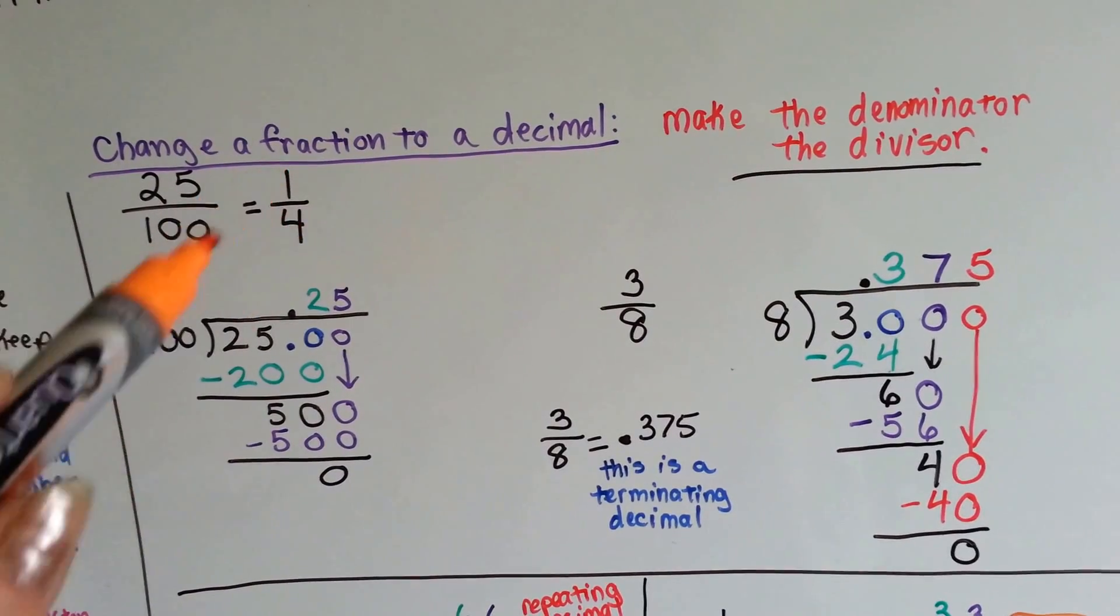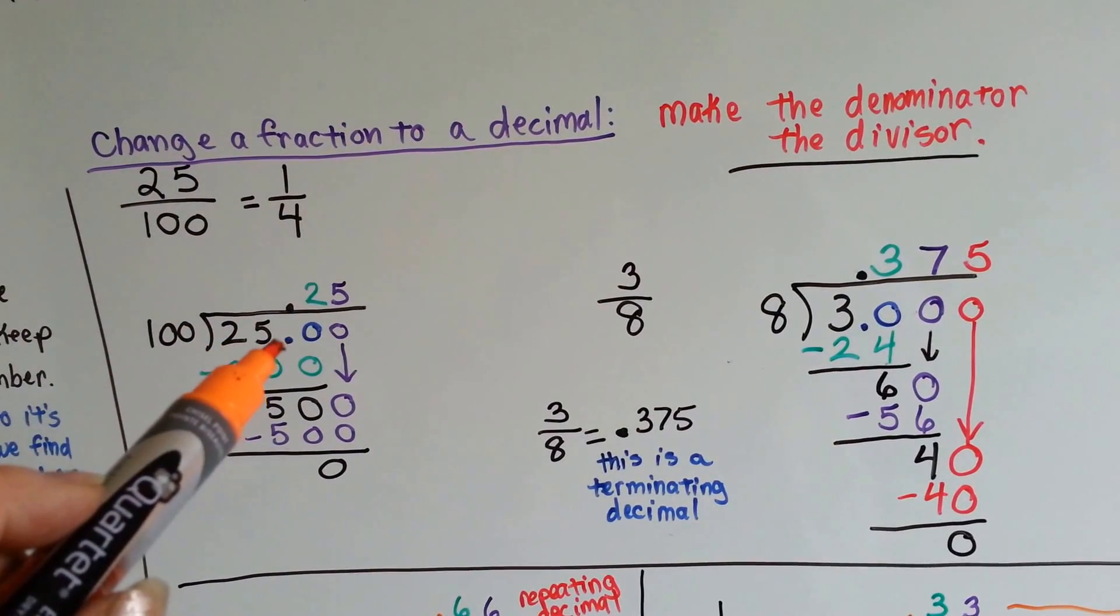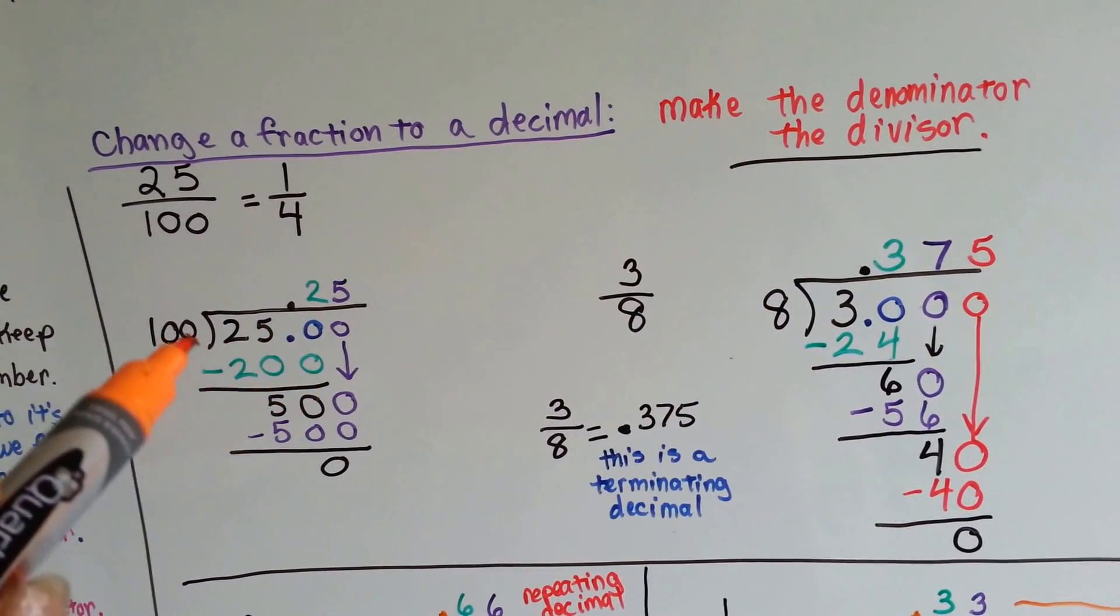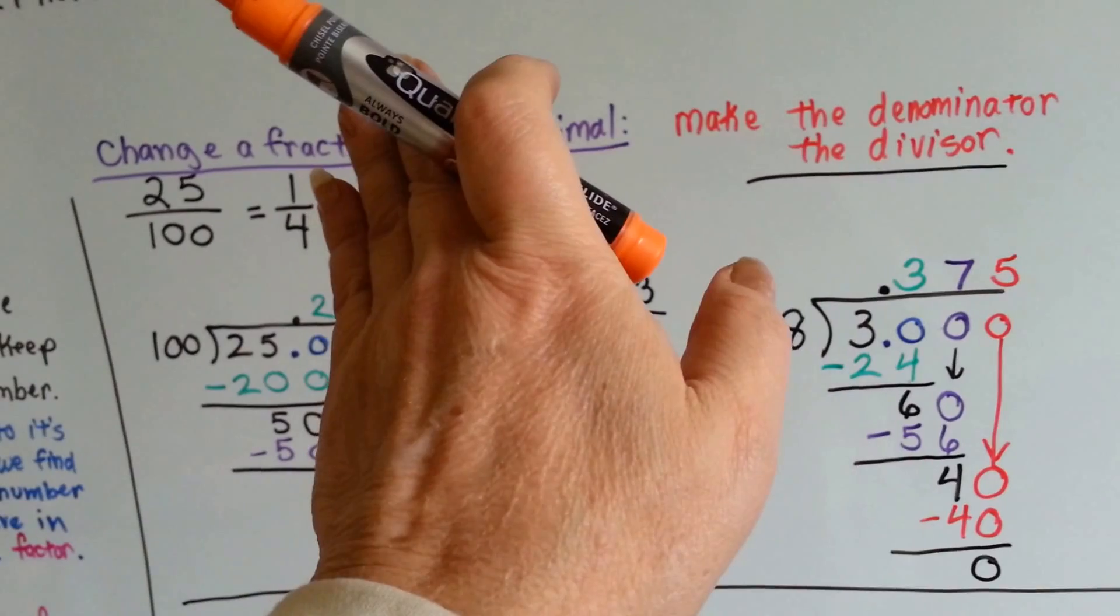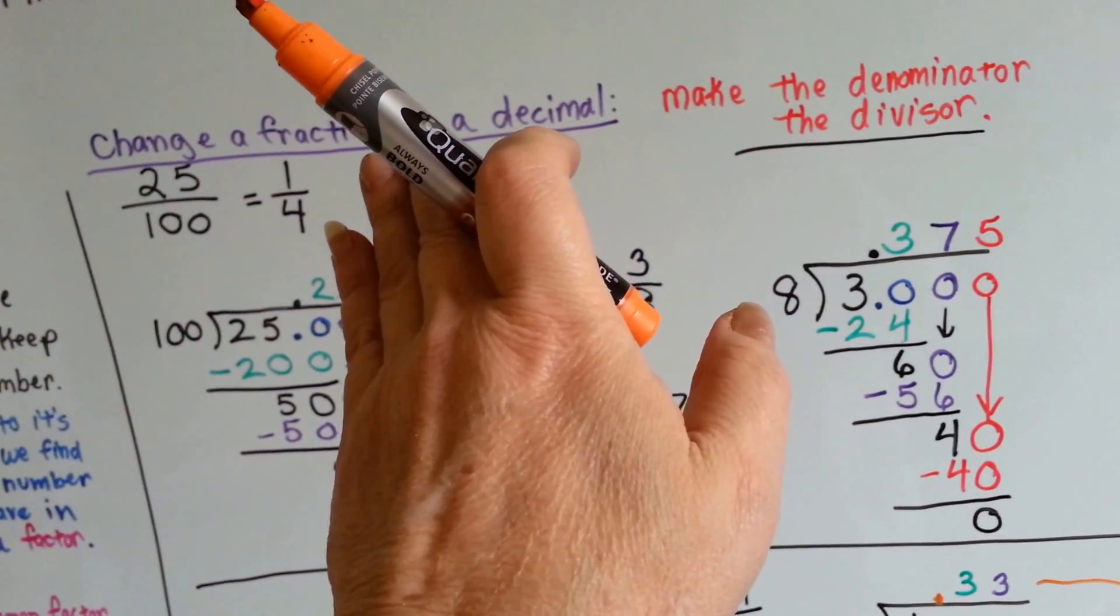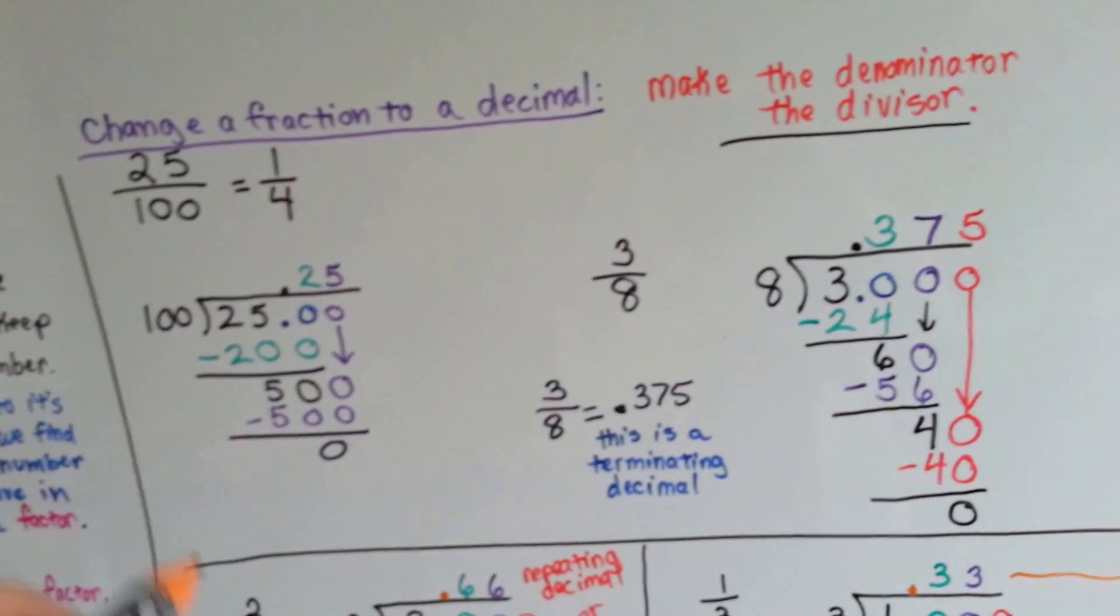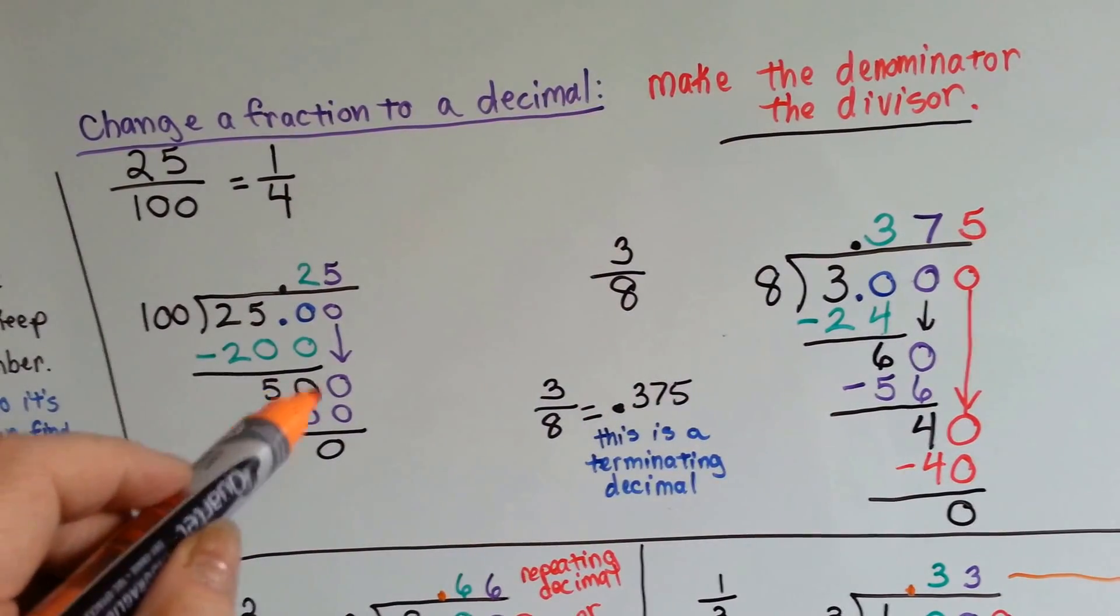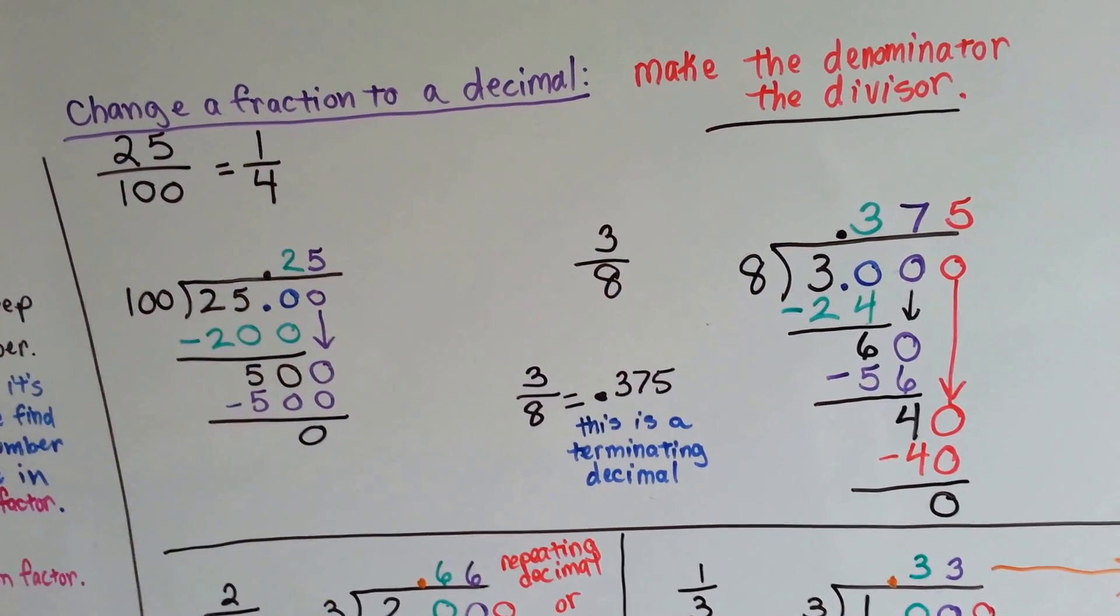To fit the one hundred into the twenty-five, we add a decimal point and some zeros. One hundred can't fit into twenty-five, but it could fit into two-fifty, two times, and that equals two-hundred. And when we do our subtraction, we get fifty, so we add another zero, because we want it to be even. One hundred goes into five hundred five times, so twenty-five one-hundredths is .25.